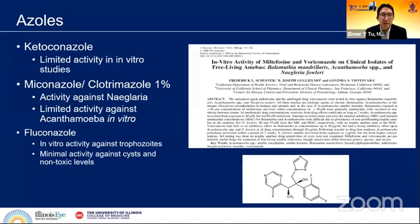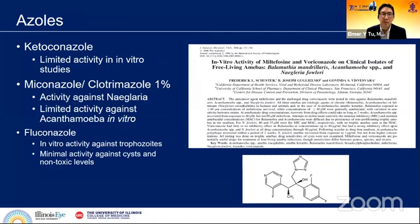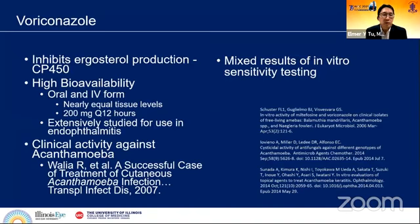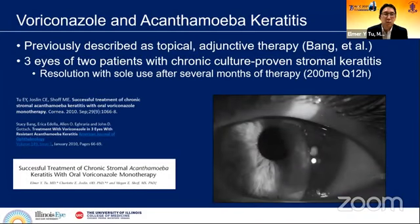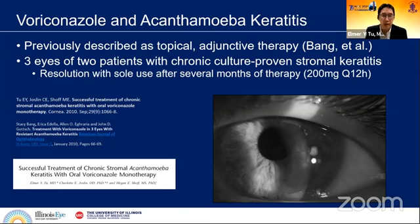The azoles have been tried in the past. Based on a 2006 paper by Schuster and Covindasamy, we were looking for additional options for acanthamoeba and found that voriconazole was probably the most promising agent. It has high bioavailability and some clinical activity against acanthamoeba, though there are mixed results in in vitro testing. The first description of its topical adjunctive use was from Wilmer, where it was felt to help with therapy. We published a case series of three eyes of two patients with chronic culture-proven stromal keratitis in a challenge-rechallenge model — these patients resolved their acanthamoeba keratitis with voriconazole alone, demonstrating some efficacy.